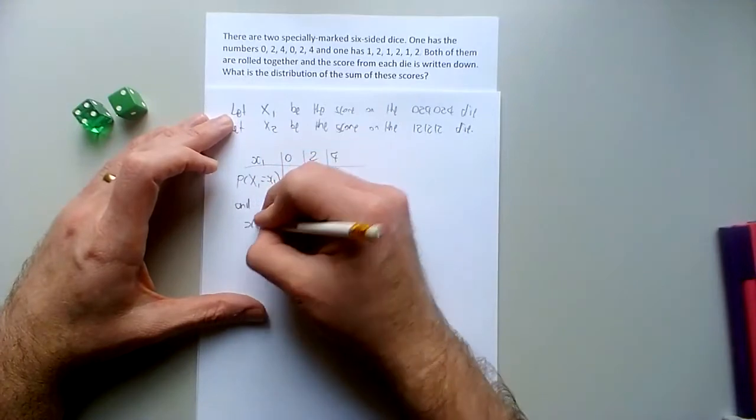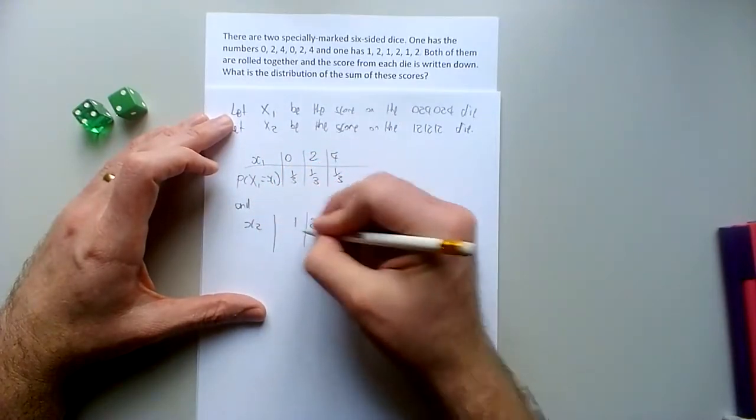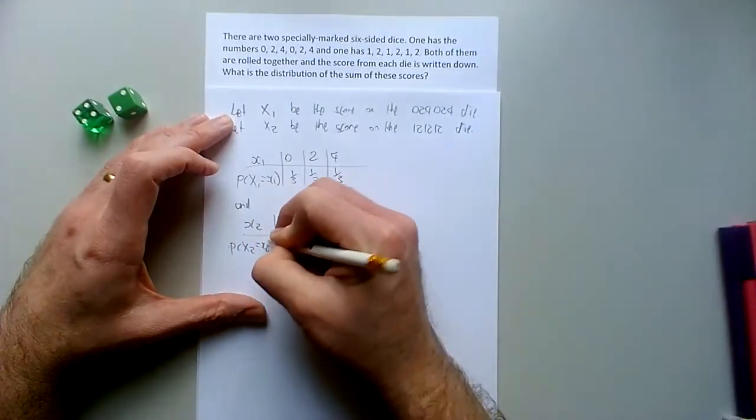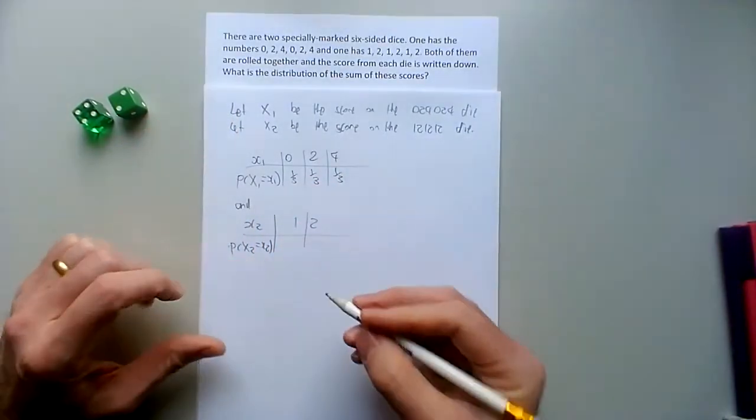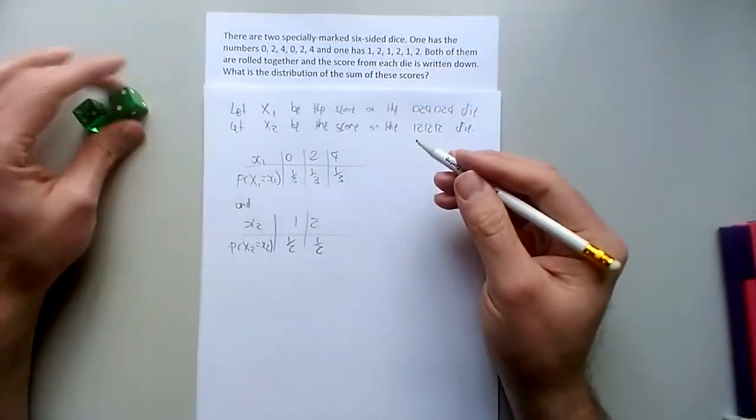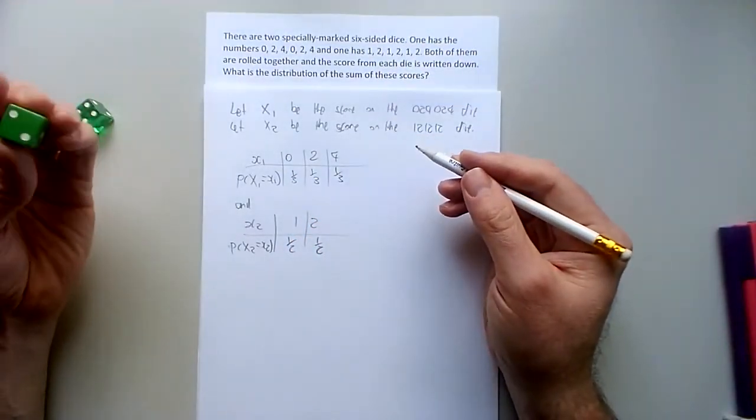And let's see, x2 can be 1 or 2. And the probability that capital X2 is equal to little x2 would be half and half because half of them are 1's and half of them are 2's.